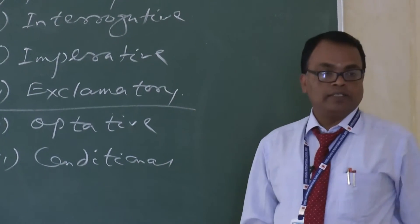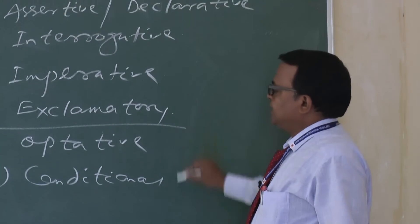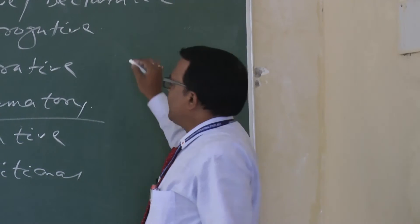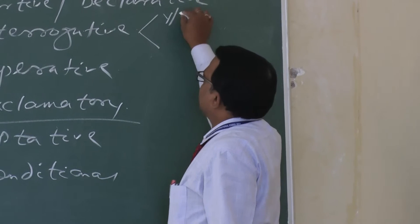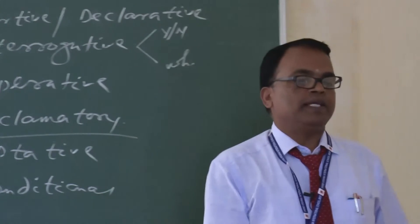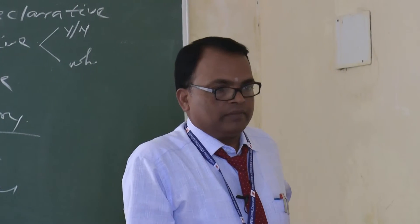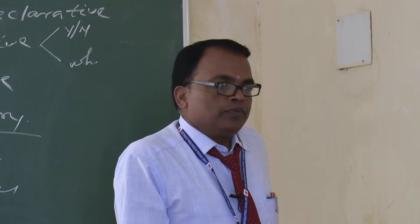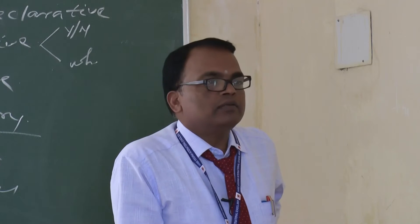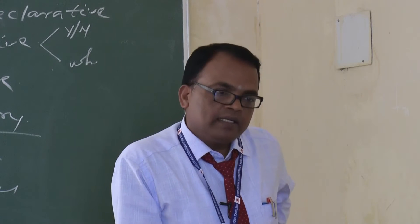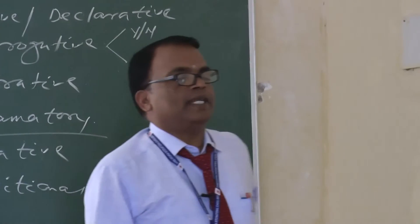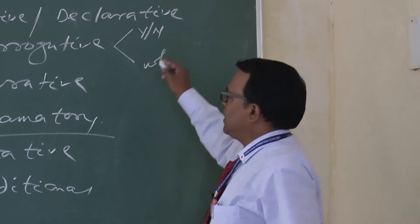Every sentence can be divided into negative and interrogative forms. Interrogative sentences have two types: yes-or-no questions and wh-questions. Yes-or-no questions begin with an auxiliary verb, and we get the answer with yes or no. Example: Are you Indira Gandhi? No, sir. Have you eaten? Yes, sir.